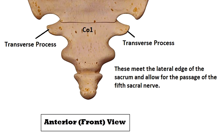On either side of Co1 you'll notice a bony process extending out which is called the transverse process. Transverse means extending across, and a process means a projection coming off a bone. These processes meet the lateral edge of the sacrum and they allow for the passage of the anterior aspect of the fifth sacral nerve.